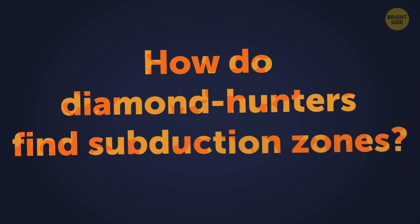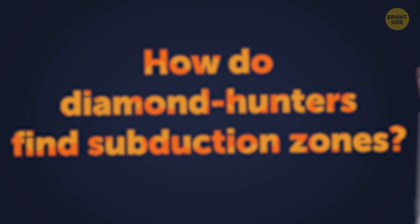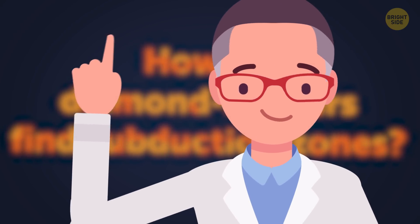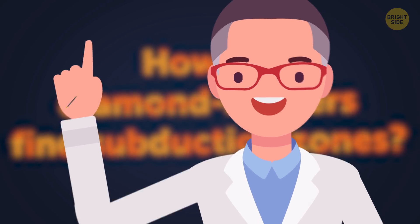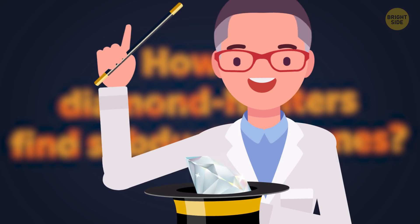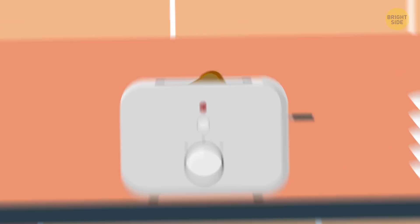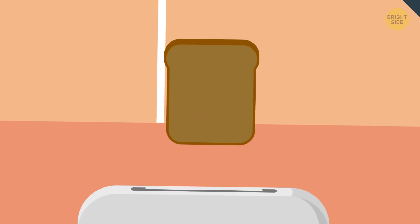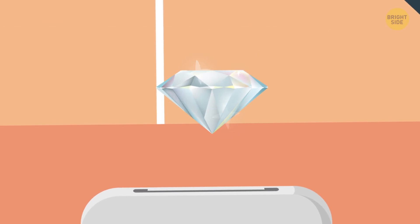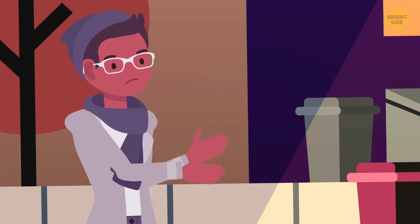But how do diamond hunters find subduction zones all the way at the bottom of the ocean? Good question, because it's not easy, even for scientists. So some people save themselves the trouble and make their own diamonds. You can make a diamond from anything with carbon in it. Yup, even burnt toast. Just gotta add heat and pressure. But you can't do it at home because, well, your toaster isn't hot enough. Your pressure cooker won't work either.